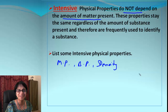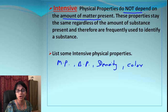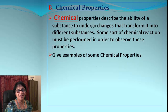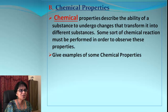Most of the time, intensive properties are constants we see in chemistry. Color is another example — if I have a yellow piece of paper and cut it into small pieces, it will still remain yellow. There are of course many more examples of intensive physical properties.